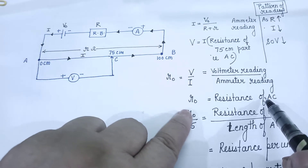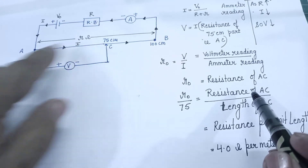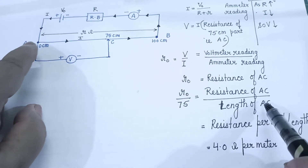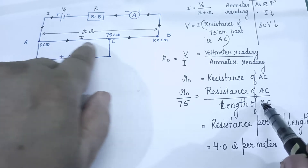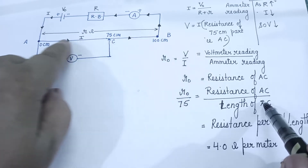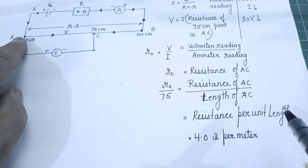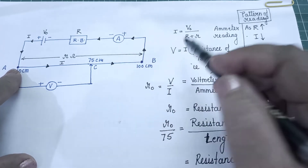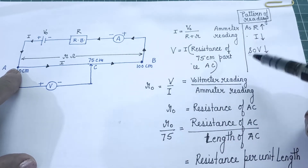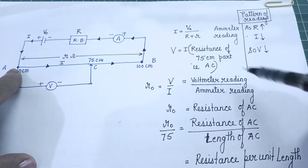If you divide the resistance of the AC wire by the length of the AC wire, then you are actually calculating the resistance of this wire per unit length, and that is what is finally asked you to calculate. So just look at the pattern which we should see in the voltmeter, ammeter, and resistance in the observation table.